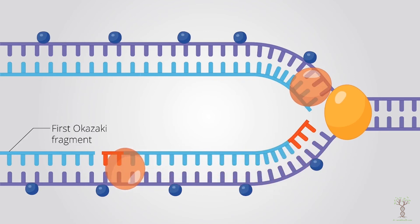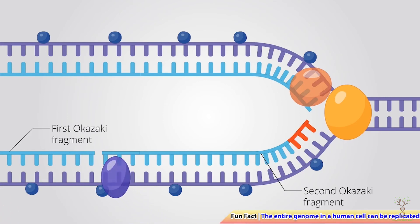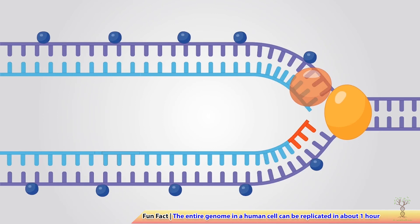And then the primers will be removed and replaced with DNA. And then an enzyme called ligase will come and seal the gaps, forming new phosphodiester bonds where the RNA primer was removed and replaced with DNA.